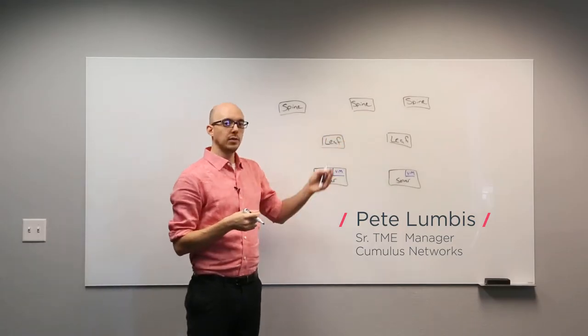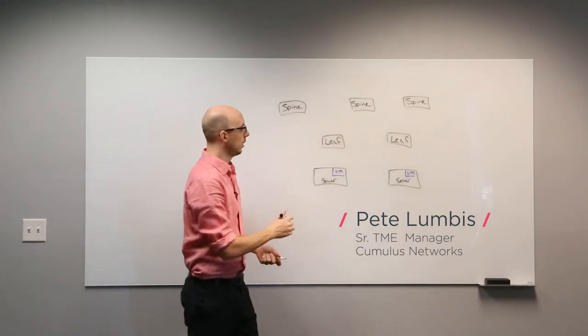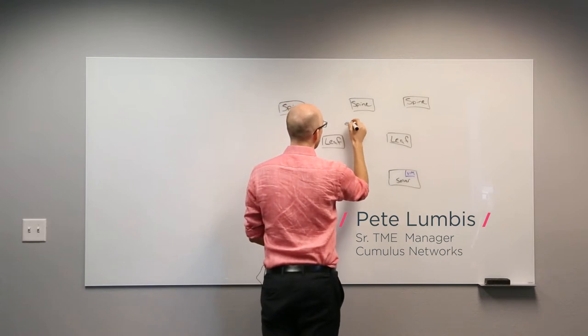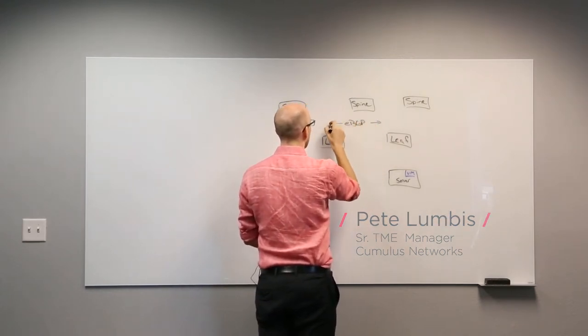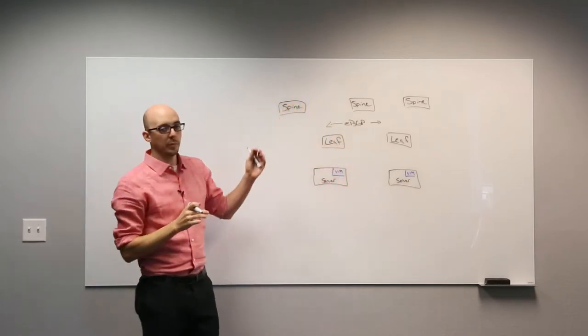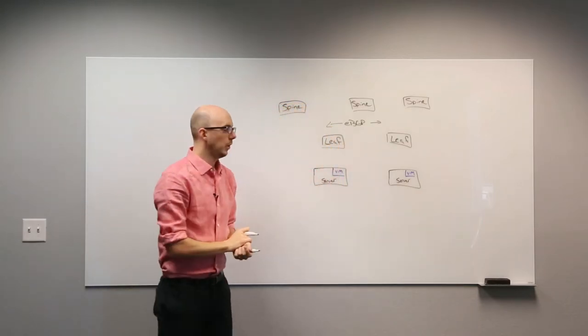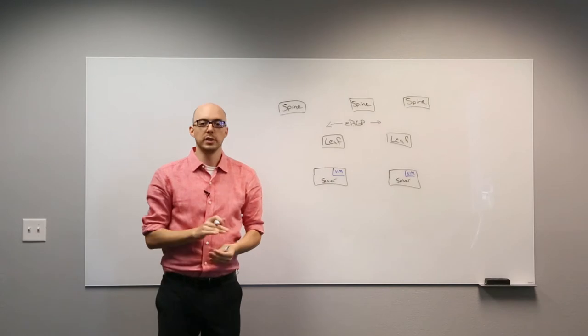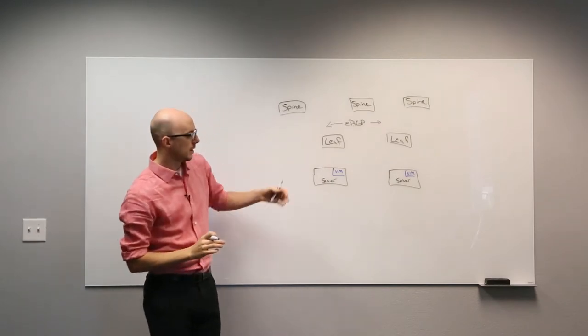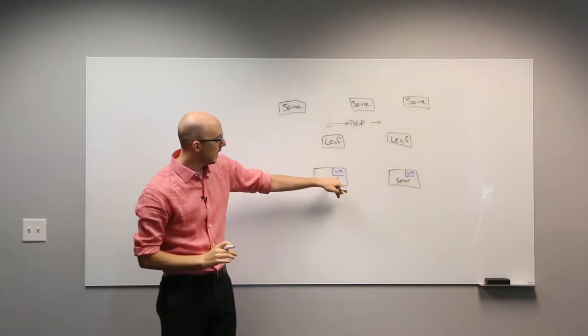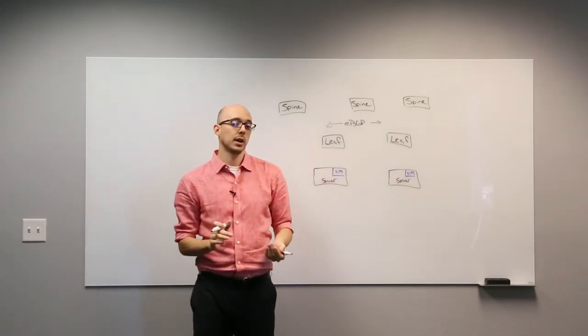So I have a traditional spine and leaf network, pre-deployed, running eBGP across it to connect my spines and leafs together. This is a pure Layer 3 spine and leaf network. I also have my servers attached to leafs, in which VMs will be deployed by OpenStack Nova.